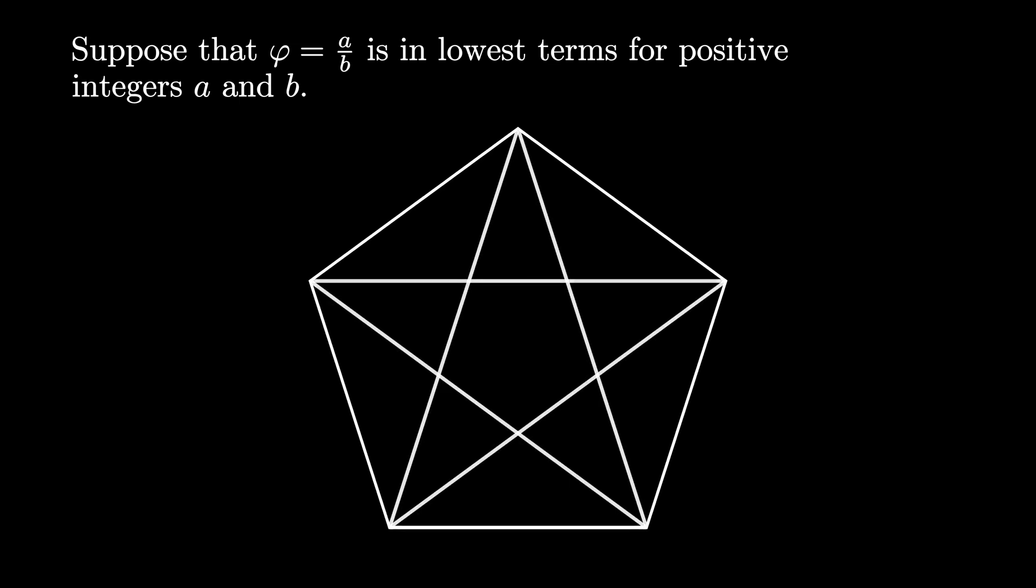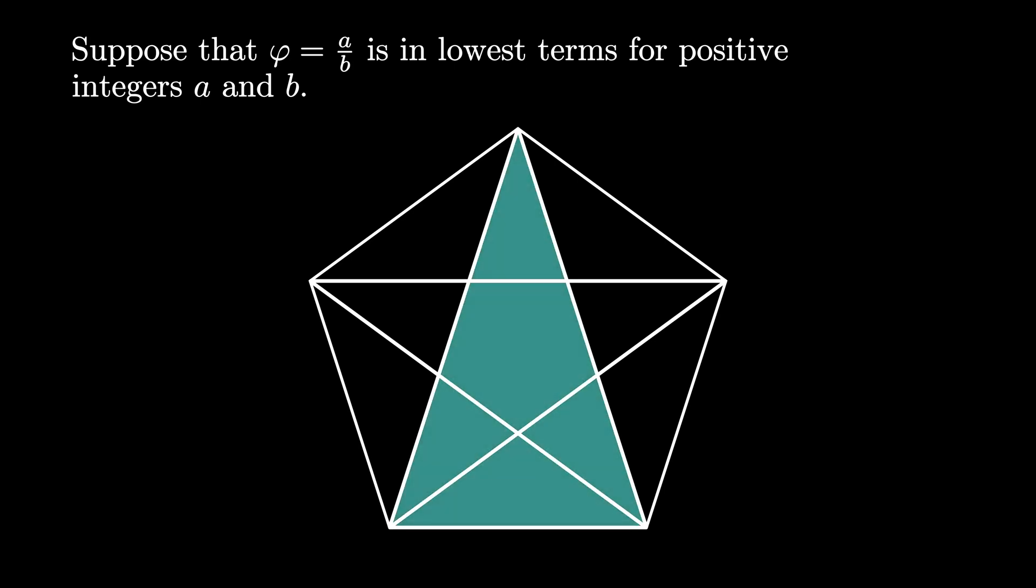Here's a cool way to use this diagram. Let's suppose that the golden ratio is rational. That means that it can be written as a ratio of two integers, say a over b, and let's assume that this ratio is in lowest terms. The fact that phi equals a over b means that there is a regular pentagon like this, where the diagonal is length a and the side length of the pentagon is b.